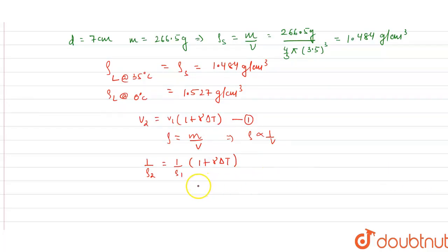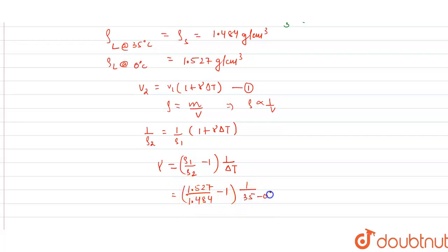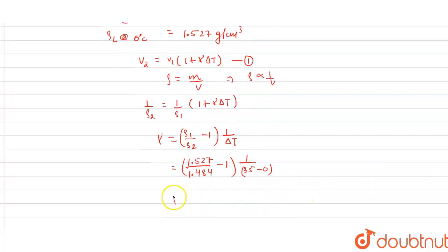Solving for γ: γ = (ρ_initial/ρ_final − 1) / ΔT. Substituting the values — initial density 1.527 g/cm³ at 0°C, final density 1.484 g/cm³ at 35°C, and ΔT = 35 − 0 = 35 — we get the coefficient of cubical expansion as 8.28 × 10⁻⁴ per degree Celsius. This is the required answer.